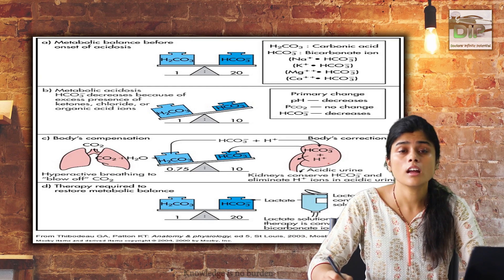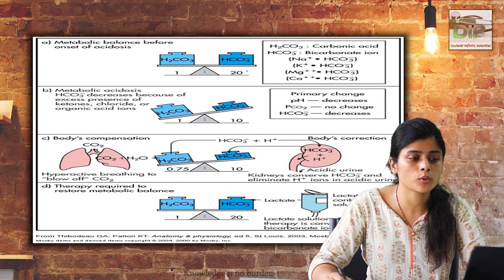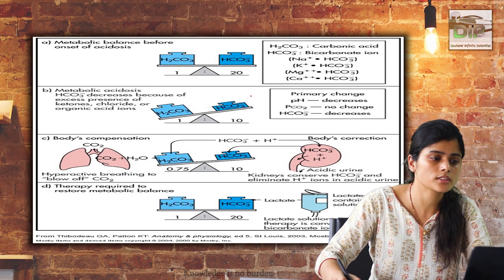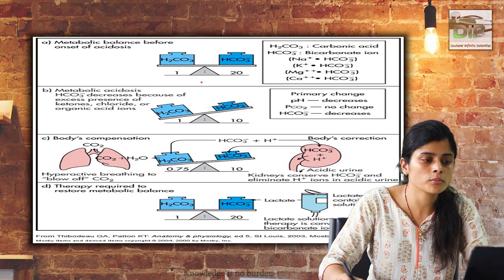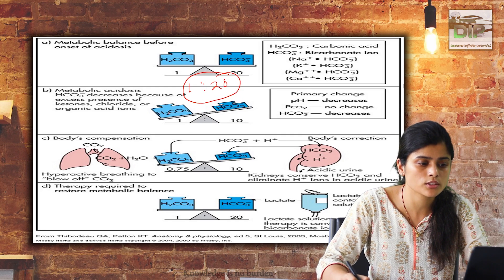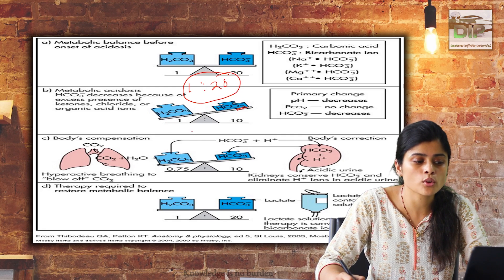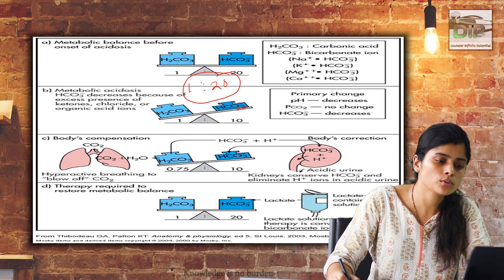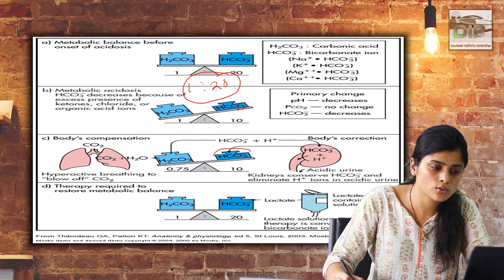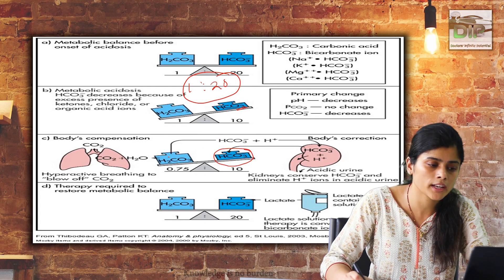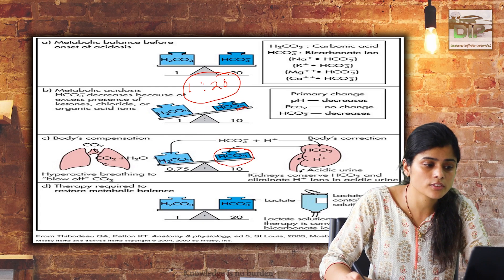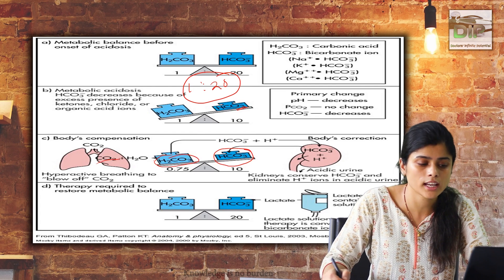In metabolic acidosis, normal carbonic acid to bicarbonate ratio of 1:20 is disrupted — less bicarbonate and more protons are present. The body tends to reabsorb bicarbonate in the secondary phase, with the first phase being removal of carbonic acid as CO2 to normalize the ratio.